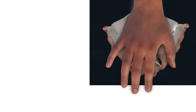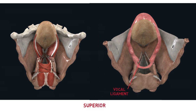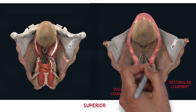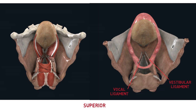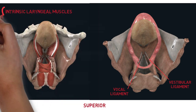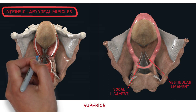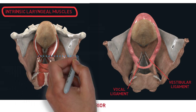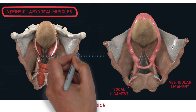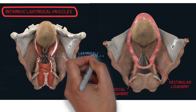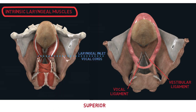From the superior view, we can see thin elastic ligaments within the vocal folds that will vibrate and produce sound when air is directed to them. And just above it, there is a pair of vestibular ligaments. Mucosa folded over these ligaments forms the false vocal cord. We can divide the laryngeal muscles into intrinsic and extrinsic muscles. The intrinsic muscles can be further divided into those which control the size of the laryngeal inlet and those which alter the vocal cords.